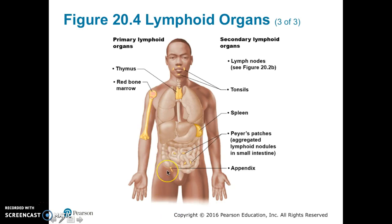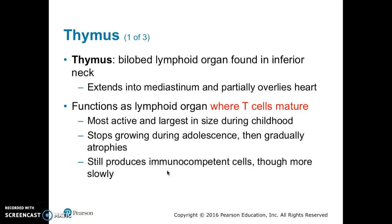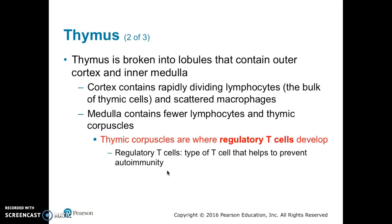The thymus is a bi-lobed lymphoid organ in the inferior neck area. It extends into the mediastinum and partially overlies the heart. The thymus is a place where T-cells mature. It is most active and largest in size during childhood. It stops growing during adolescence, then gradually atrophies, but continues to produce immunocompetent cells, though more slowly.